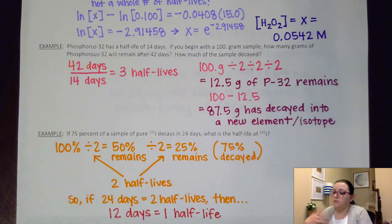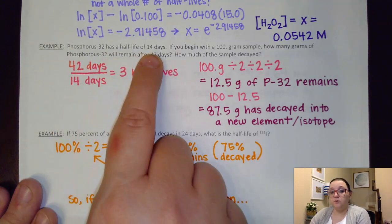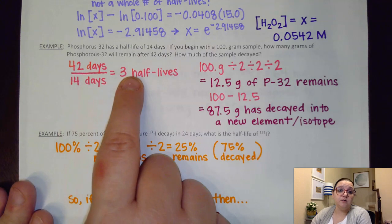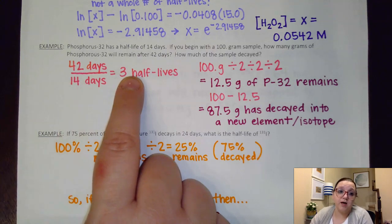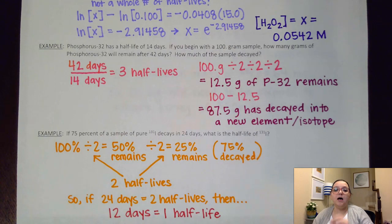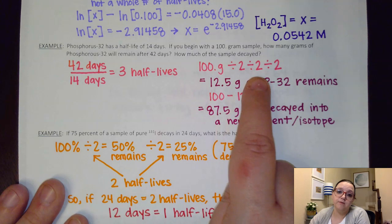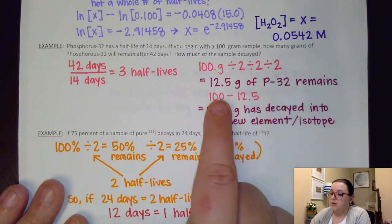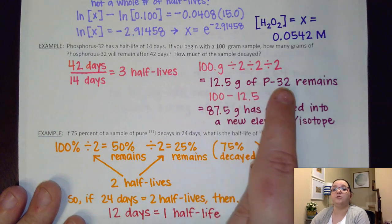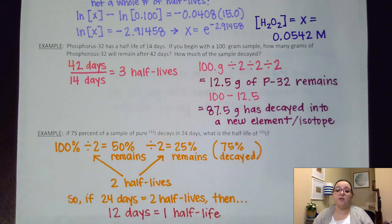So I'm going to actually do this with some sneaky math. First thing I'm going to do is I'm going to say, if I have 42 days that are passing, and each half-life is 14 days, how many half-lives would that give me? 14 days goes into 42 three times. That's a whole number of half-lives, three half-lives. That's going to make this really easy to do. That 100-gram sample is going to get cut in half three times. So if I cut this in half three times, 100 divided by 2 is 50, divided by 2 again is 25, divided by 2 again is 12.5. So that means 12.5 grams of the phosphorus-32 would remain. The difference from the 100 grams I started with should be how much has decayed into a new element or isotope.